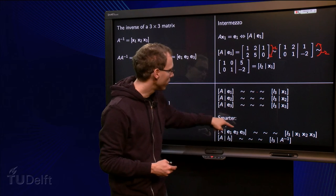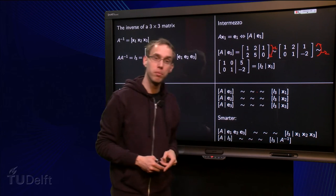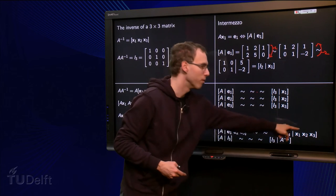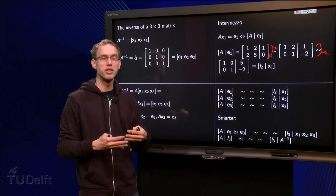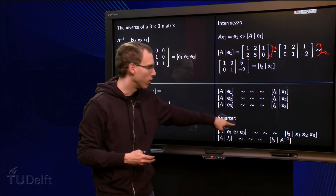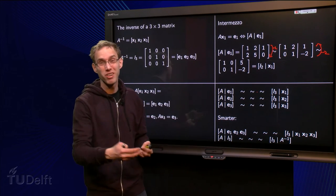We get the I3 matrix in front of the bar. And the e1 will become an x1, e2 will become an x2, and e3 will become an x3. And in this way our row reduction process is a bit more complicated, we have more rubbish on the right. But we have to do it only once instead of three times.